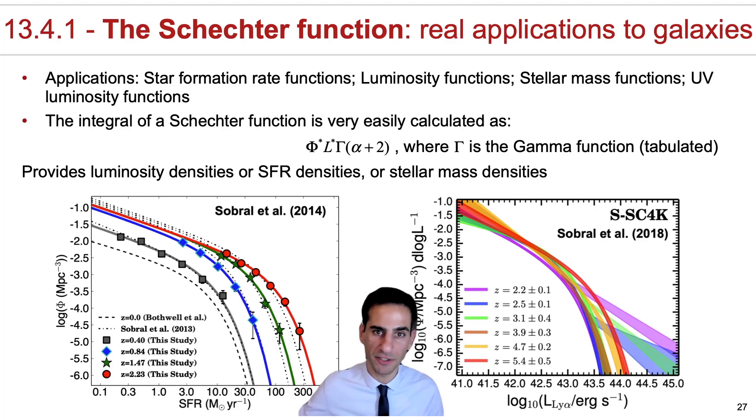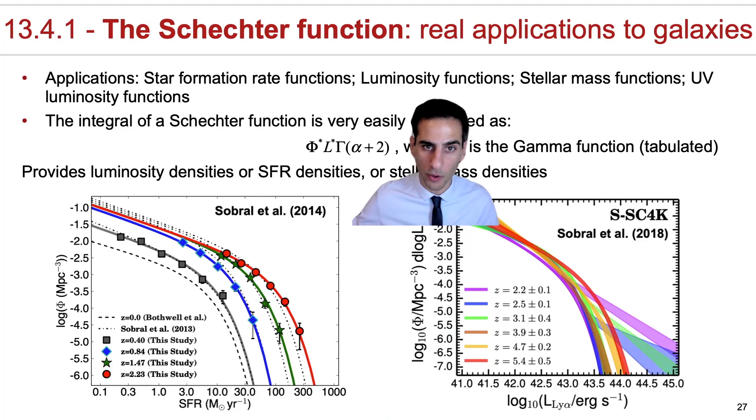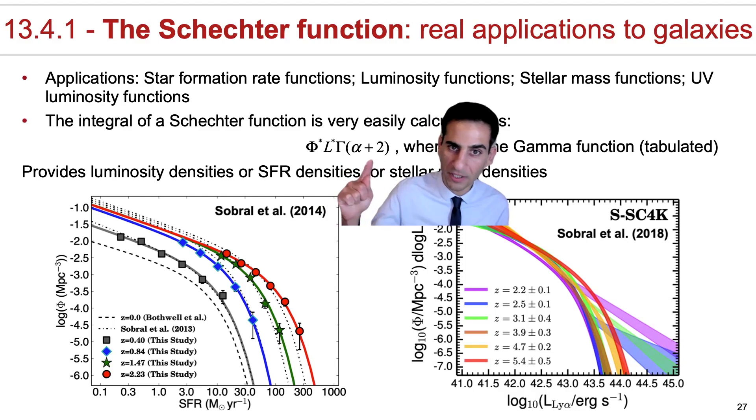One of the big advantages of the Schechter function is that the integral actually comes out very simply in an analytical form. The integral of a Schechter function is actually given by phi star, L star, and then this term, which is the gamma function. This is not something you'd know, but that you can very easily look up online or in a calculator. Essentially the value you give to the gamma function is alpha plus 2.